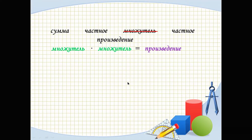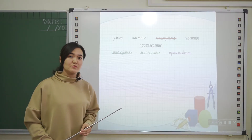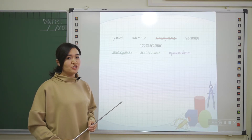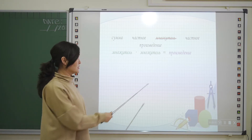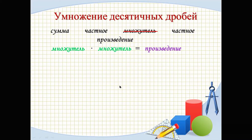So, today's topic, guys, is умножение десятичных дробей — multiplication of decimal fractions. Let's look at an example: 59.8 multiplied by 1.3.